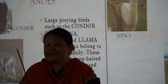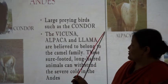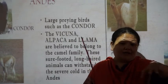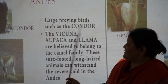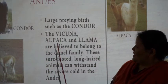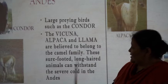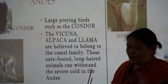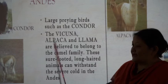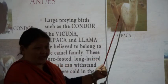In the Andes you get large preying birds such as the condor — preying birds that look for weak victims to eat. The vicuna, alpaca and llama are believed to belong to the camel family. These sure-footed, long-headed animals can withstand the severe cold in the Andes and survive in that type of climate. The alpaca and llamas are found there, like a camel.